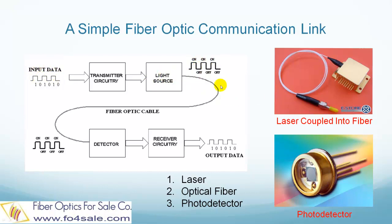The second part is the fiber. The fiber's purpose is to transmit the light through a very long distance, such as from New York to Paris. And the third part is the photodetector. The photodetector detects the light and generates electronic current.